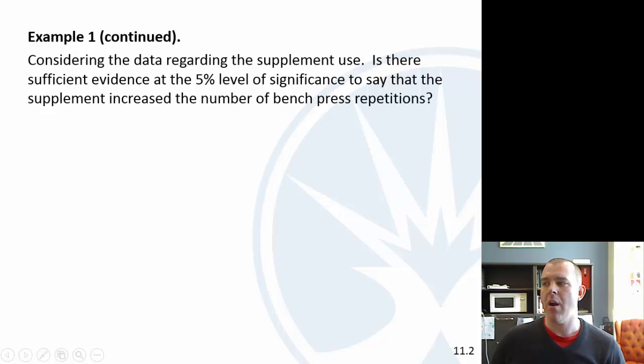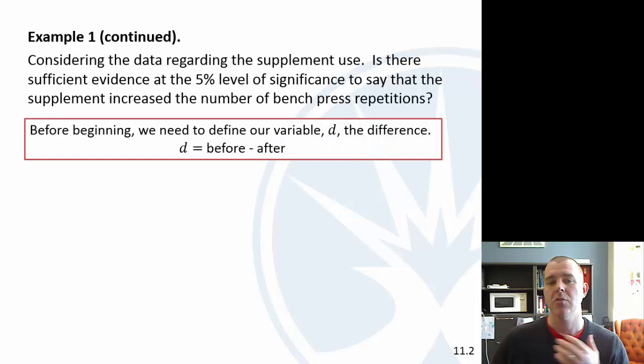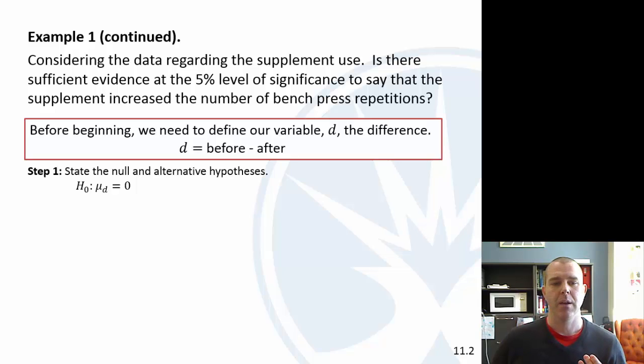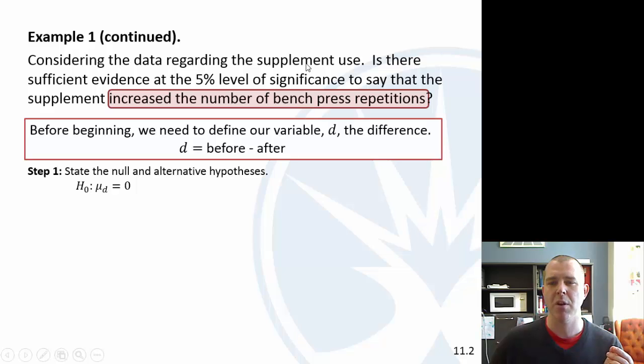Let's do an example. Considering that data regarding supplement use, is there evidence at the 5% level to say that the supplement increased the number of bench press repetitions? Before you do this, if you're looking at the average difference, you have to define what your difference is. You can do it either before minus after or after minus before, but then that changes your hypothesis test. I'm going to define it as before minus after. Our null is that the mean difference is zero. We're testing whether this increased the number of bench press repetitions, so then we would think the after would be bigger. Our alternative hypothesis is that we think the mean difference is negative, because we think the before is going to be smaller than the after.